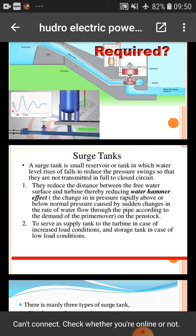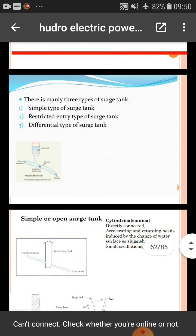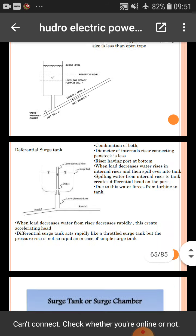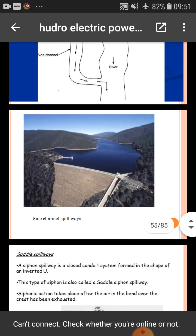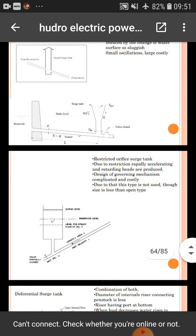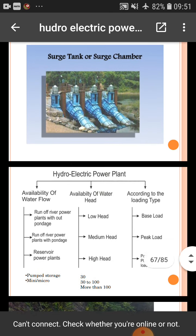Surge tank: a surge tank is a small reservoir or tank in which the water level rises or falls to reduce pressure swings so they are not transmitted in full to the closed conduit. They reduce the distance between the free water surface and the turbine, thereby reducing the water hammer effect. The simple open surge tank is cylindrical or conical and is directly connected to the penstock. It produces accelerating and retarding heads induced by change of water surface. A photograph of the surge tank or surge chamber is shown.